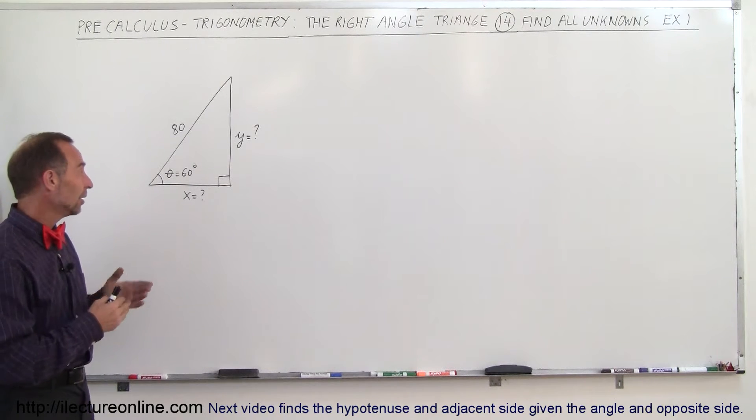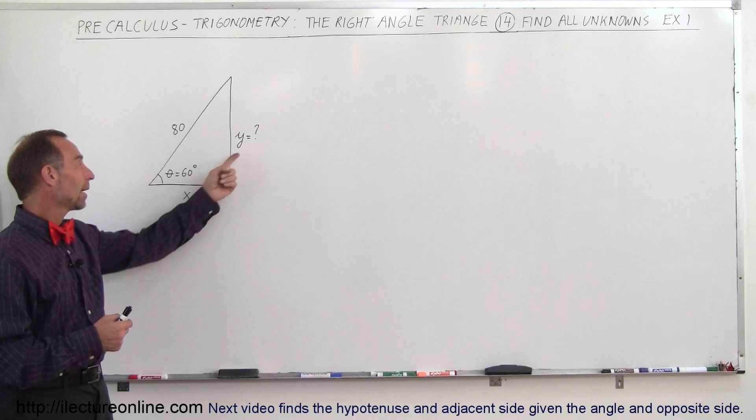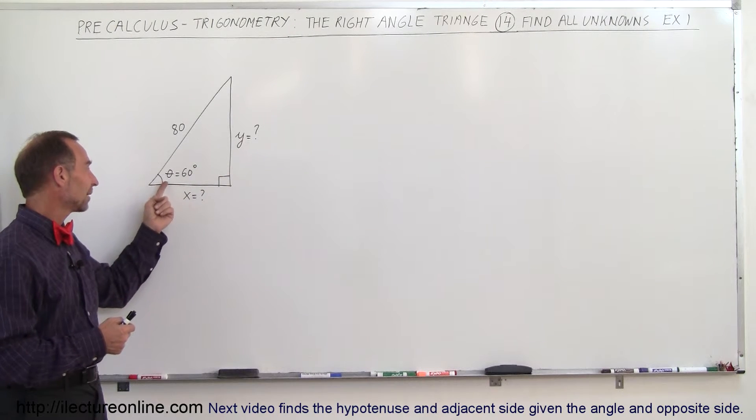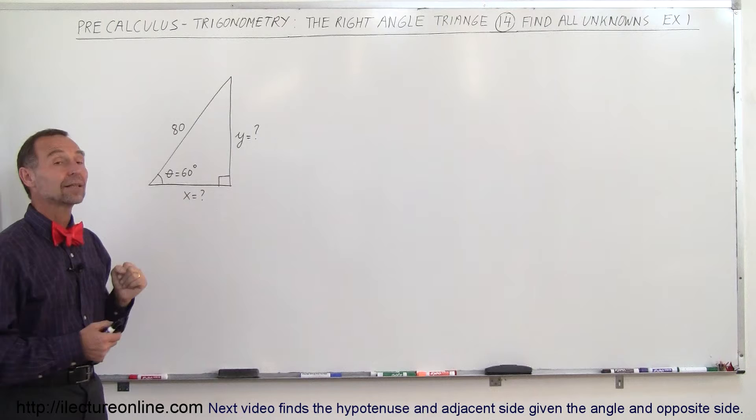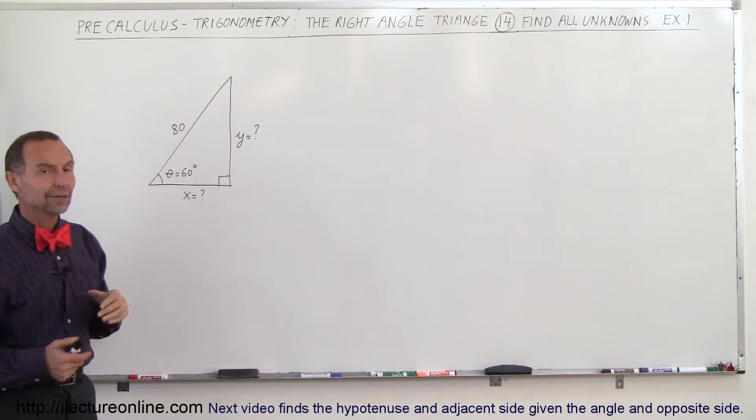So in this case we have a right angle triangle. We're trying to find x and y. This happens to be the adjacent side to the angle that's given and the opposite side to the angle as given. We're given the hypotenuse.